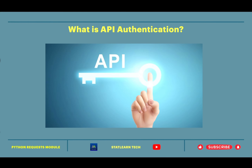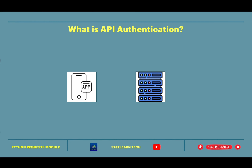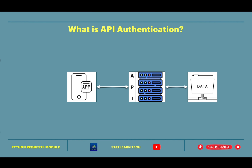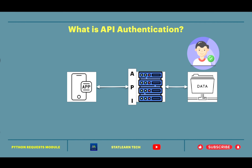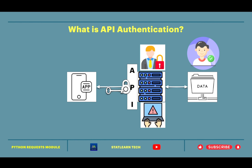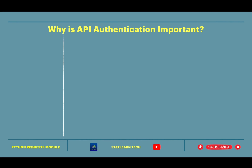Let us start by understanding what API authentication is. When two software systems communicate via an API, they often exchange sensitive data. To ensure that only authorized users or systems have access to that data, the API requires some kind of authentication. This works like a lock and key system — the API has a lock and the client has the key. The client must provide the key to access the data. Without authentication, your API will be exposed to unauthorized access.